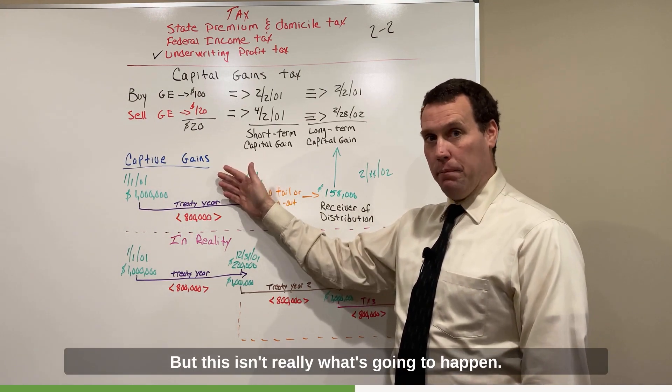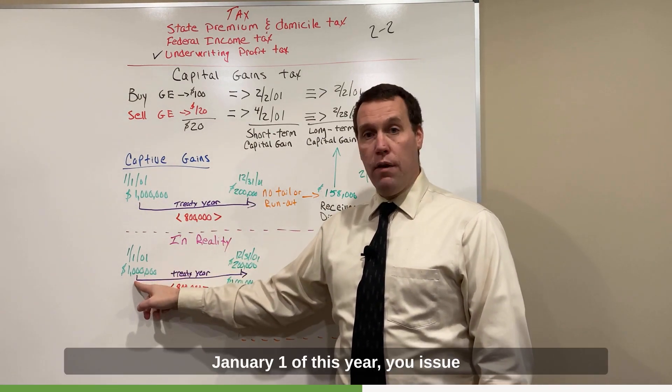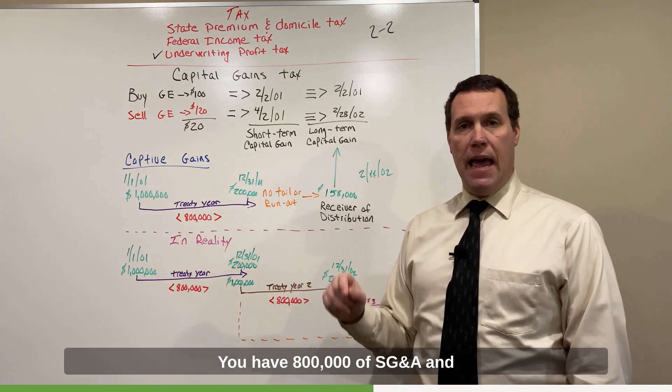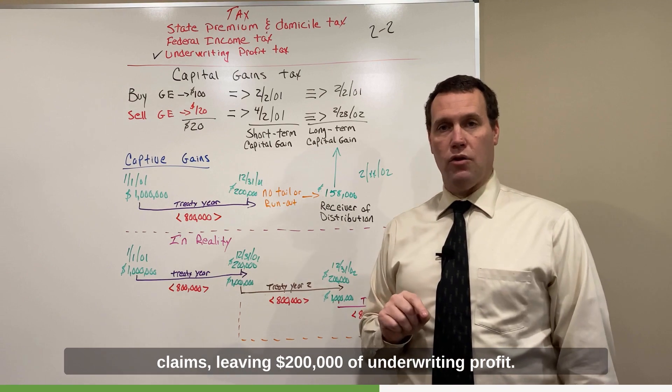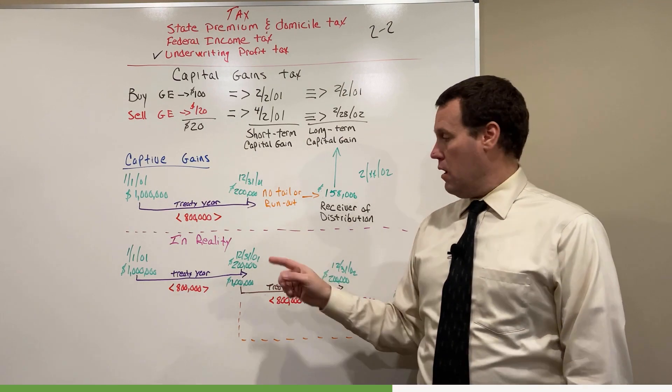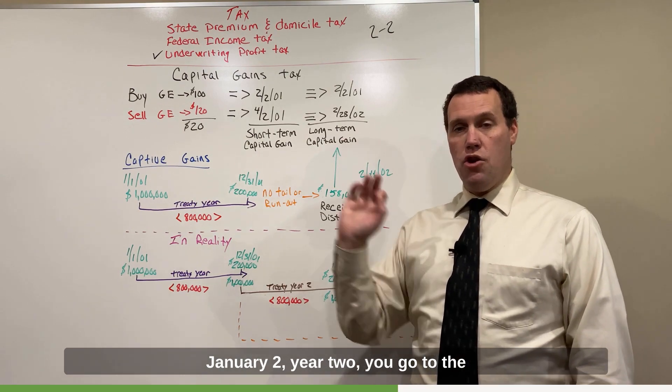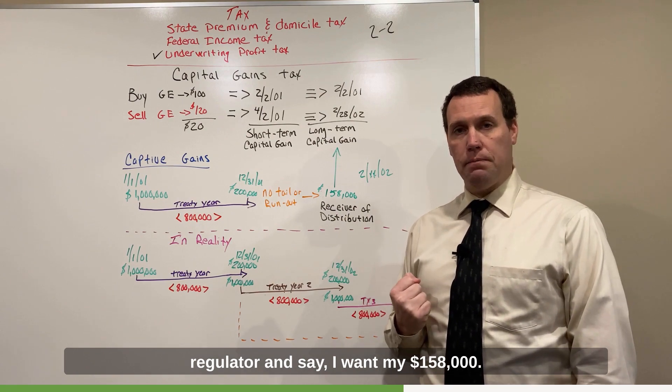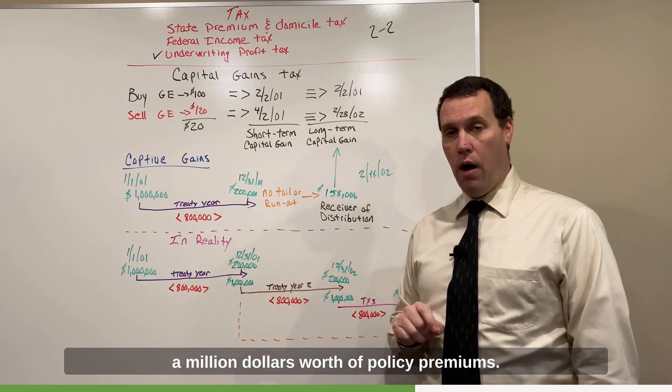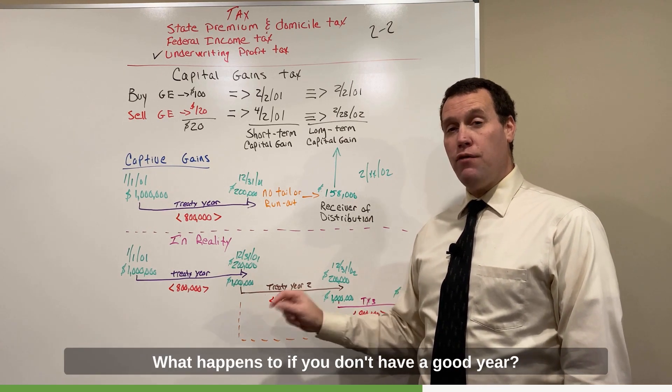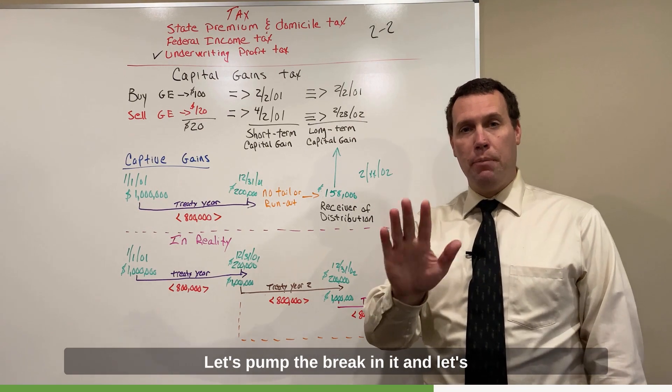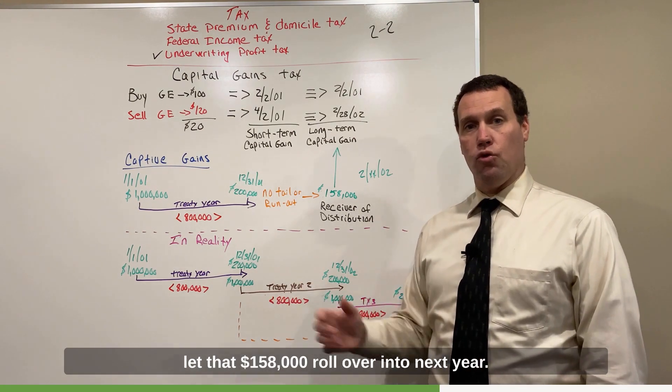But this isn't really what's going to happen. This is really what's going to happen. January 1st of this year, you issue a million dollars worth of policies. You have $800,000 of SG&A and claims leaving $200,000 of underwriting profit. You're taxed at the federal level leaving $158,000 of cash. January 2nd, year two, you go to the regulator and say, I want my $158,000. The regulator is going to say, now wait a minute, your captive just issued a million dollars worth of policy premiums. What happens in year two if you don't have a good year? Yes, you were profitable in the first year, but there's no guarantees for the second year. Let's pump the brakes on it and let's let that $158,000 roll over into next year.